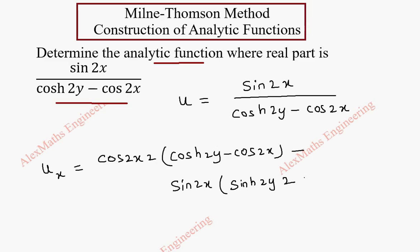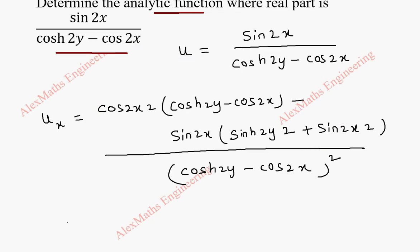Cosh 2y is sinh 2y into 2 minus cos 2x is minus sin 2x into 2. So we make this as plus sin 2x into 2. Now whole division we have denominator square. So we are following the quotient rule when we differentiate so whole square.